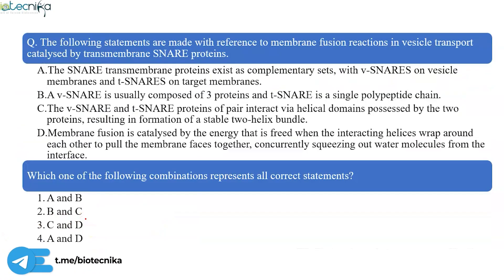First, the question: the following statements are made with reference to membrane fusion reactions in vesicle transport being catalyzed by transmembrane SNARE proteins. Statement A: The SNARE transmembrane proteins exist as complementary sets with v-SNARE on vesicle and t-SNARE on target membrane. Statement B: A v-SNARE is usually composed of three proteins and t-SNARE is a single polypeptide chain.